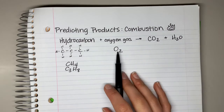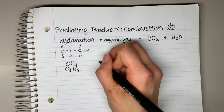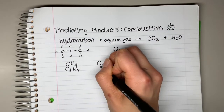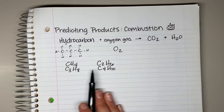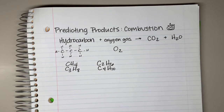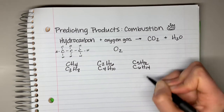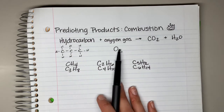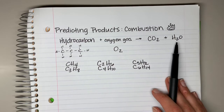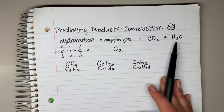The trick is being able to recognize a hydrocarbon. Any number of carbons bonded to any number of hydrogens is going to be a hydrocarbon. We'll use examples like CH4, C3H8, C5H12, or C6H14. No matter which hydrocarbon you plug in, as long as it's reacting with oxygen, you're getting carbon dioxide and water.